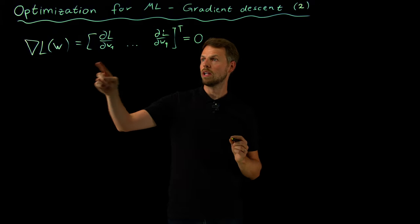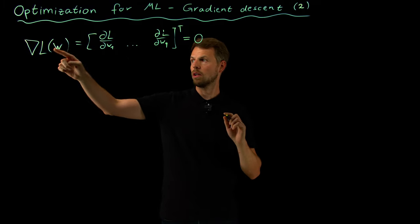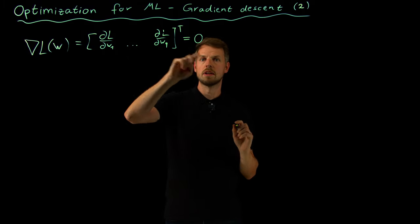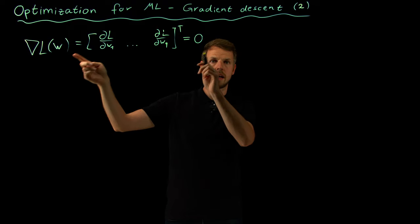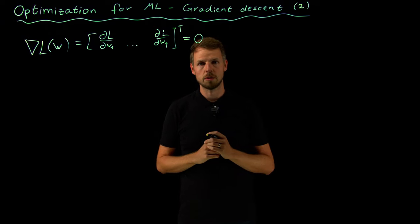And so here we have the gradient information which helps us without looking at other points. Just at the local weight itself, if the derivative, or in higher dimensions the gradient, is zero, we know that this point satisfies the necessary condition for optimality.